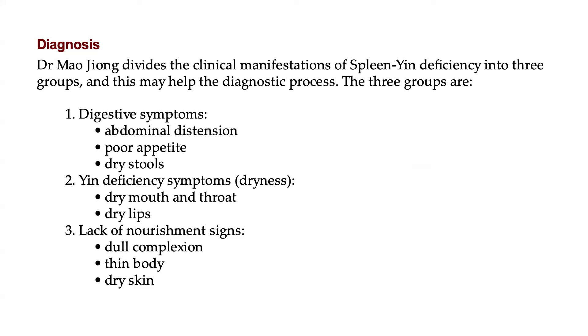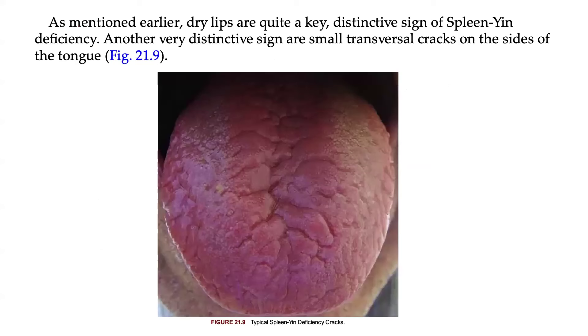EIN deficiency symptoms include dry mouth and throat and dry lips. The third group, lack of nourishment signs, includes dull complexion, thin body, and dry skin.